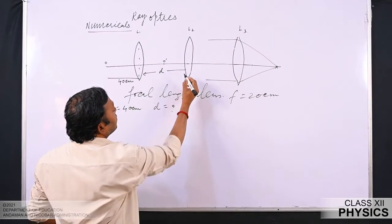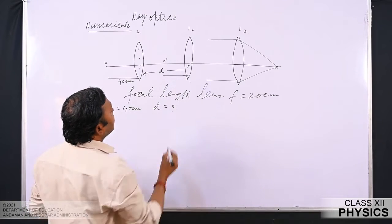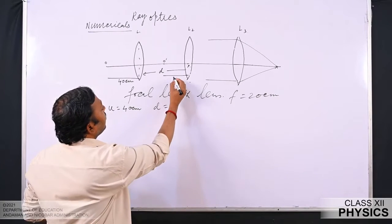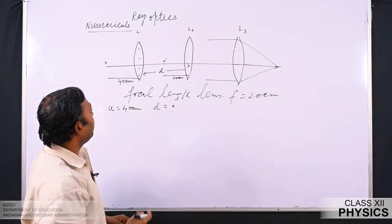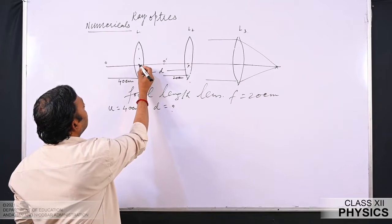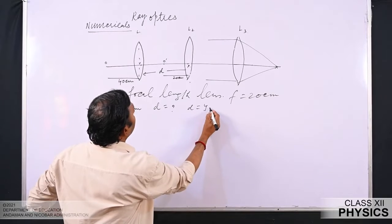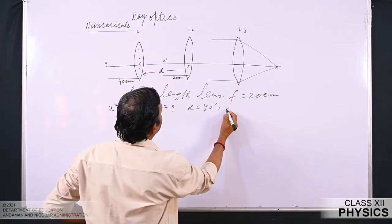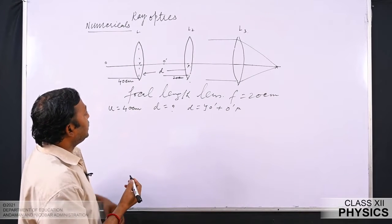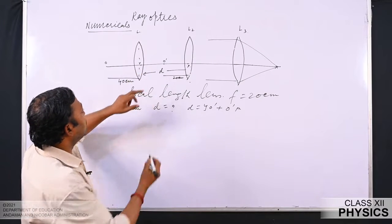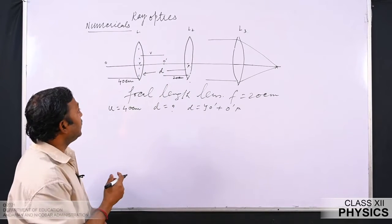The image O' formed by lens L1 must lie at the focus point of L2, so that a parallel beam comes out from lens L2. If we call the position of L2 as P, then the distance from O' to P should be 20 centimeter. To find D, we have D equal to OY' plus O'P. So we need to find the image distance V of lens L1.